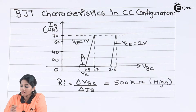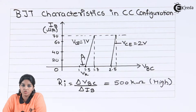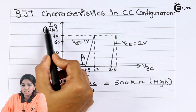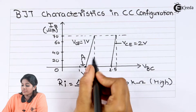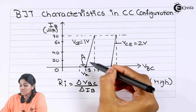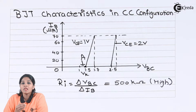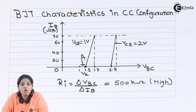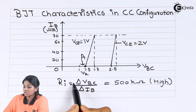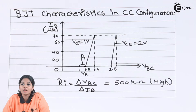From the characteristics, we see that there exists a threshold at point A, called the threshold voltage, knee voltage, cut-in voltage, or offset voltage. In the region OA, the value of base current is negligibly small even if base-collector voltage increases. After point A, as VBC increases, base current also starts to increase, but this increase is not rapid in common collector configuration. The input characteristic is used to determine the AC input resistance of the BJT, defined as the ratio of change in VBC (delta VBC) to change in IB (delta IB). The input resistance is very high, approximately 500 kilo-ohms.